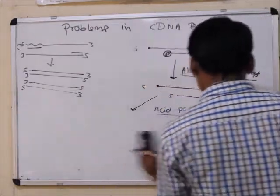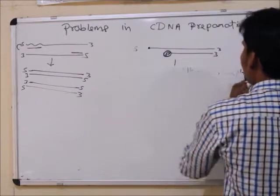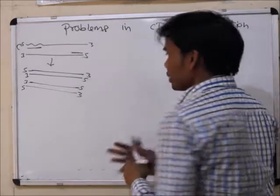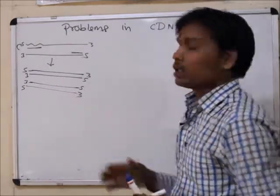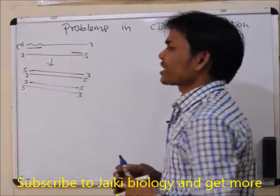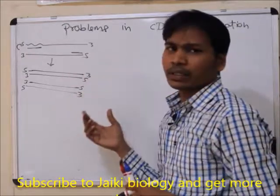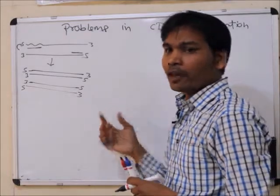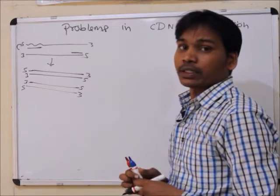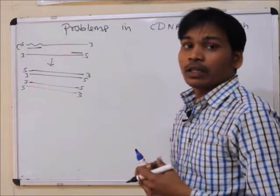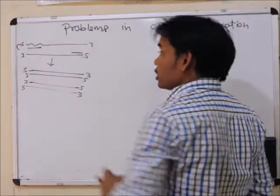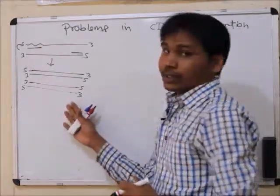Another important point: cDNA contains only exons — only coding sequences — and does not contain introns. This is because cDNA is formed from mRNA, and mRNA is produced after the splicing process, during which introns are removed. So only the expressed gene sequence is present in the cDNA.